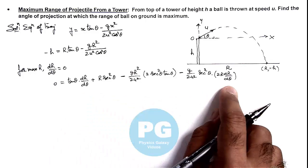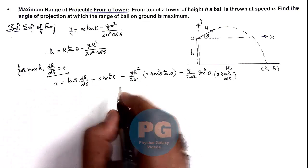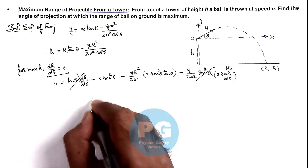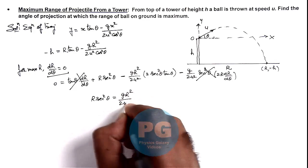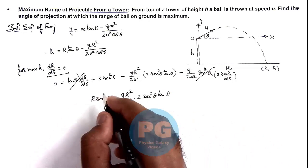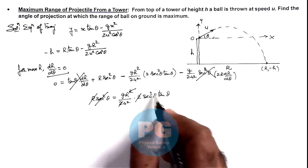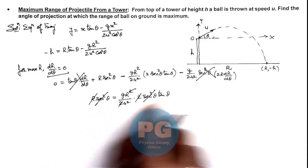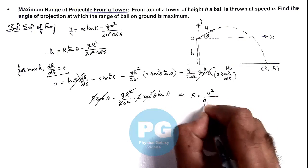This is the expression after differentiating. Setting dR/dθ = 0, the terms containing dR/dθ vanish. We are left with: R·sec²θ = (g·R²)/(2u²) · 2·sec²θ·tan θ. Here, one R cancels, 2 cancels, and sec²θ cancels — keeping in mind R and sec²θ are non-zero — giving: R = u²/(g·tan θ).